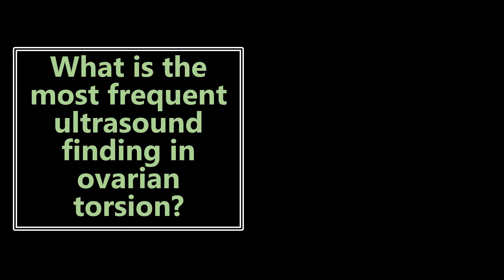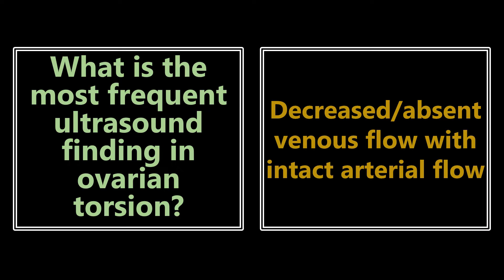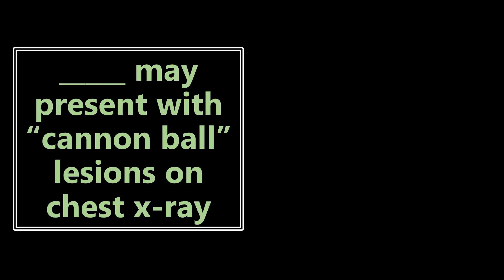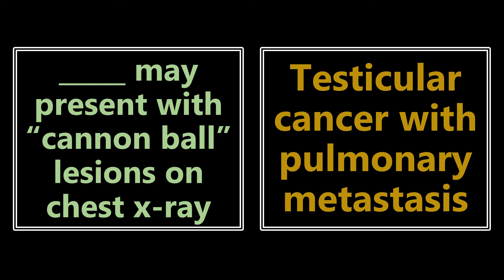What is the most frequent ultrasound finding in ovarian torsion? Do not fall for the trap — the most frequent finding is decreased or absent venous flow with intact arterial flow. You may still have intact arterial flow and should still be concerned for ovarian torsion. Also: cannonball lesions on chest x-ray in a male patient should make you think testicular cancer with pulmonary metastasis.